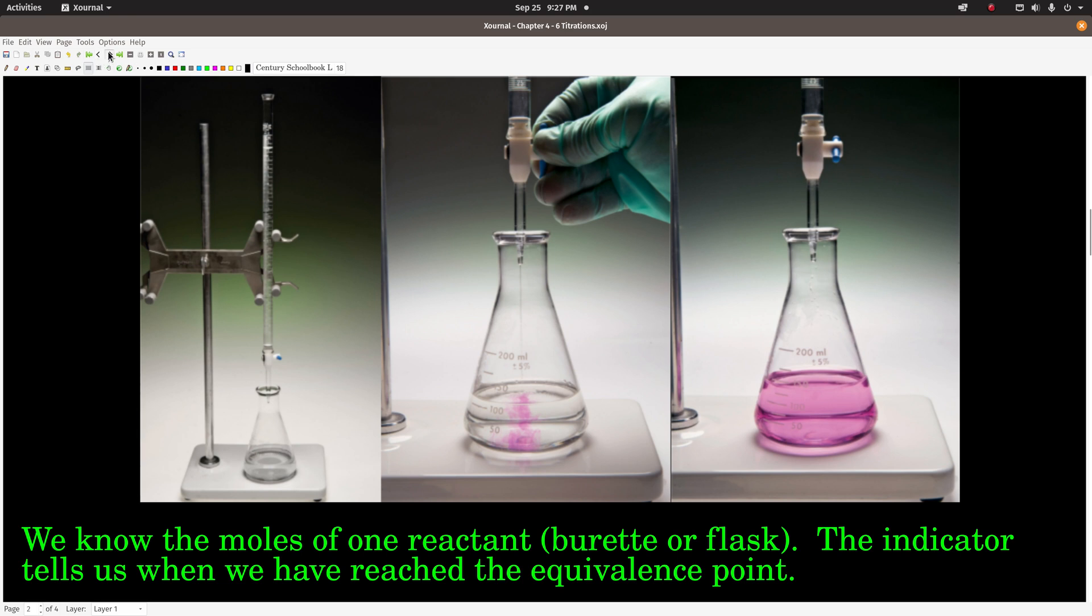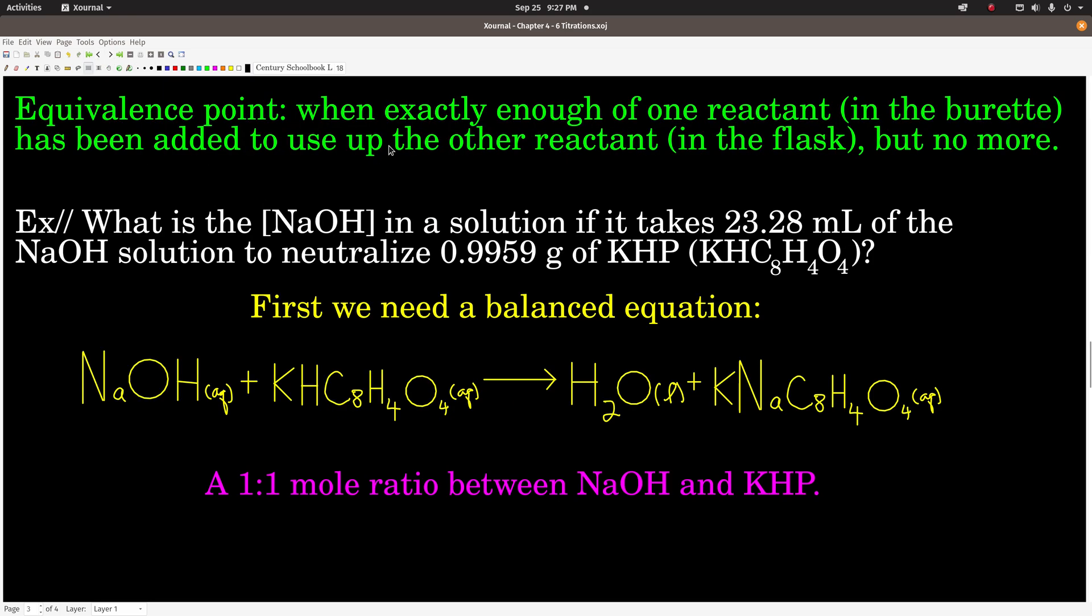Let's look at an example. So there's a definition of equivalence point when you've added exactly enough of one reactant in the burette to use up the other reactant in the flask but no more. So the idea is if we know the stoichiometry, we have the balanced equation that describes the reaction between the two reactants, knowing the moles of one at the equivalence point allows us to easily calculate the moles of the other.